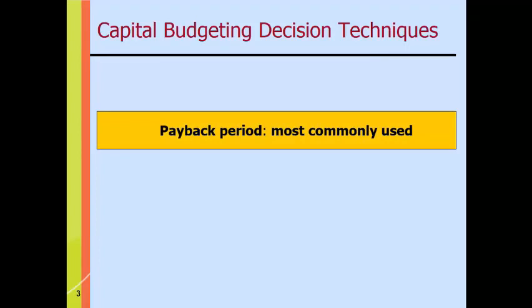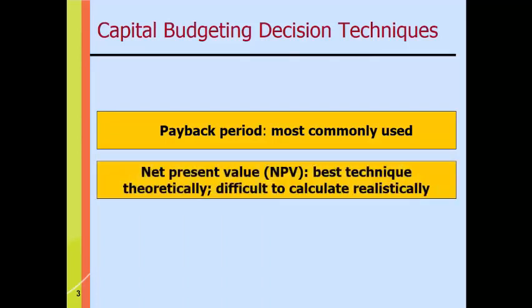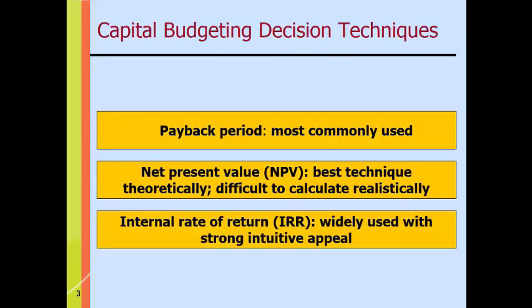There are many capital budgeting decision techniques, but we'll look at three of the biggest. The payback period is the most commonly used and most simple, but it has some drawbacks. Net present value is probably the most financially sensible one, though somewhat difficult for the uninitiated to understand. Finally, the internal rate of return is a complementary concept to NPV — it converts the NPV concept into a rate of return that more people can intuitively understand, so we'll usually calculate both together.